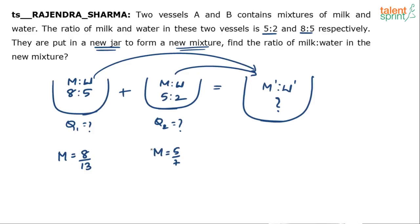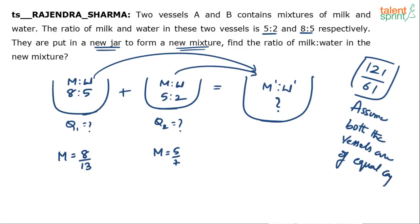And then maybe you have applied alligation rule, assuming that both the vessels are of equal quantity. When you simplify this, you will get 121:61 as the final answer, when you assume that both the vessels are of equal capacity.